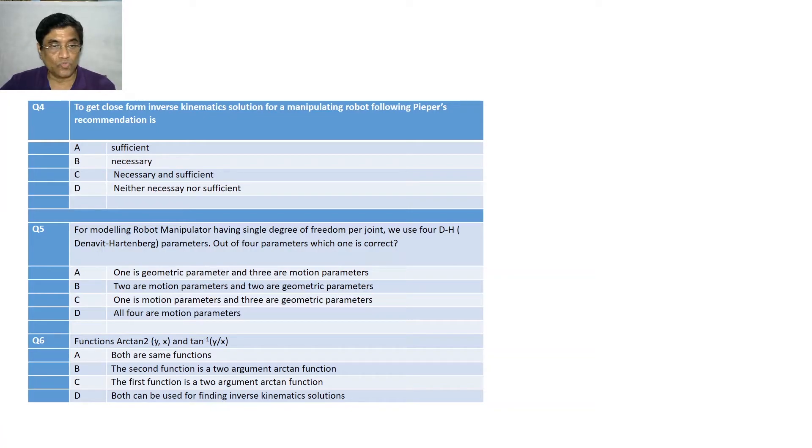Now, function arctan 2 Y, X and tan inverse Y divided by X, both are same, the second function is a two argument arctan function, the first function is a two argument arctan function, both can be used for finding inverse kinematics solution. So, you see, which one is correct? You know, I have illustrated in my lecture, say, in a 2D, you have two orthogonal axes, this is first quadrant, second quadrant, third quadrant, fourth quadrant.